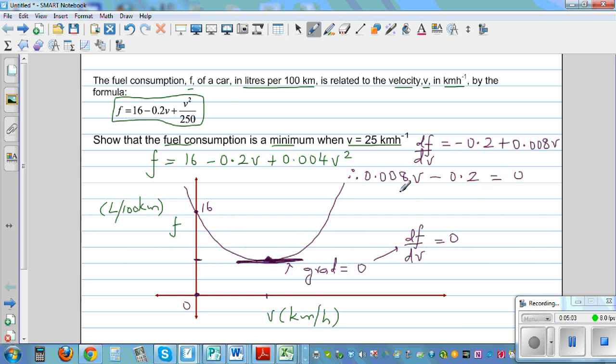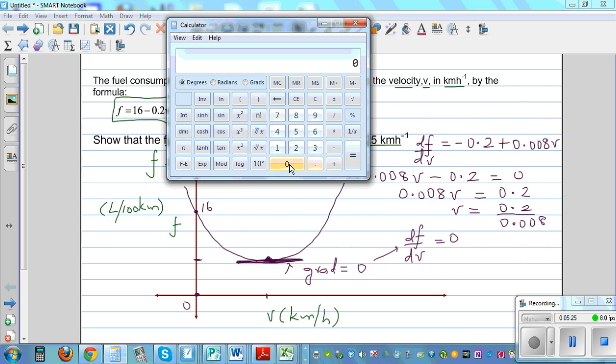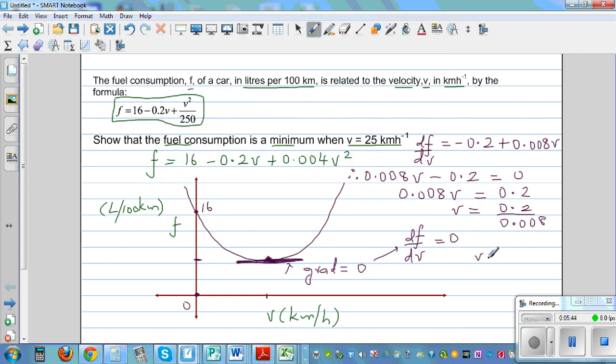So adding 0.2 on both sides, 0.008V is equal to 0.2. Now dividing both sides by 0.008, the velocity is 0.2 divided by 0.008, which is 25. So we can say your velocity is going to be 25 kilometers per hour. At this velocity, you're going to have your minimum fuel consumption.